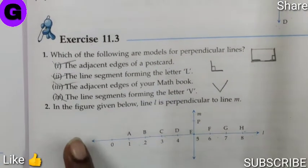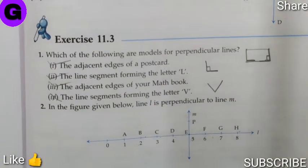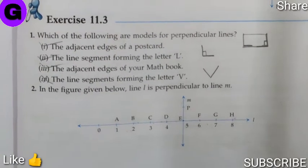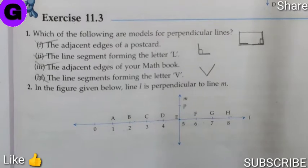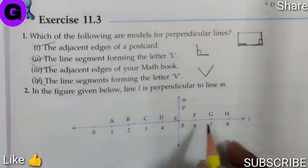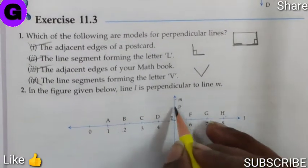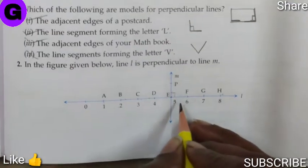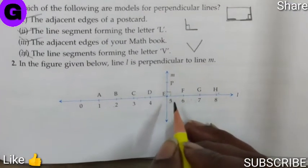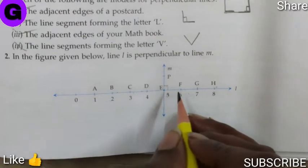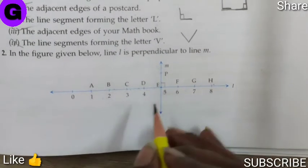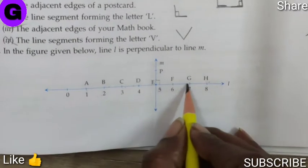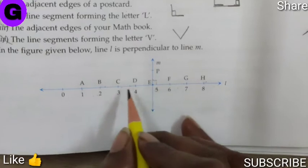Now, in the given figure below, line L is perpendicular to line M. As you can see, this is the line L and M is perpendicular. Perpendicular means it is forming 90 degrees. The first question is asking, is CE equal to EG? CE is equal to EG. Let us count the number of gaps.